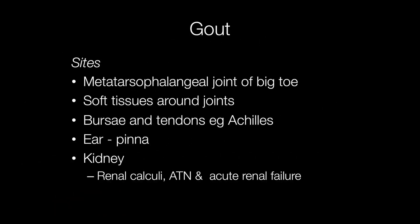Sites particularly frequently affected by gout include the metatarsophalangeal joint of the great toe, soft tissues around the joints, bursae and tendons such as the olecranon bursa and Achilles tendon, and the pinna of the ear. Gout can also affect the kidneys, causing renal calculi and acute tubular necrosis that can result in acute renal failure.